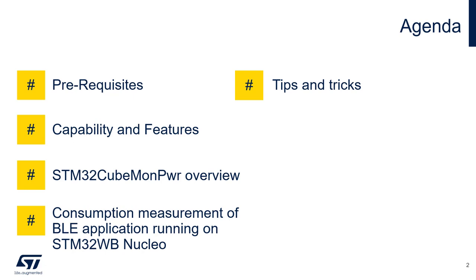We will begin with a list of hardware and software prerequisites for the demonstration, then introduce capabilities and features of STM32 Power Shield and Q-Monitor Power. Then we will take a look at consumption measurement of a simple BLE peripheral application on WB Nucleo, and at the end I will show some tips and tricks for the consumption measurement.